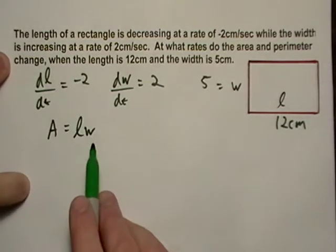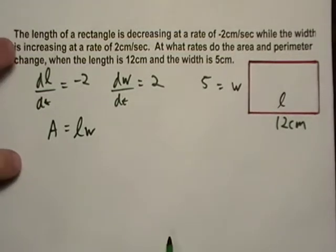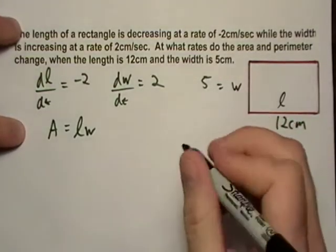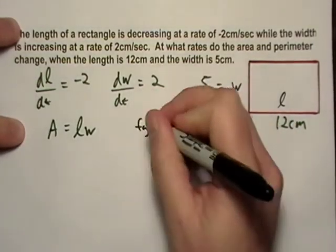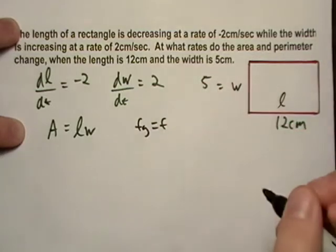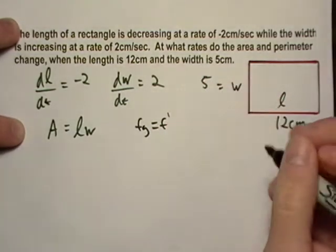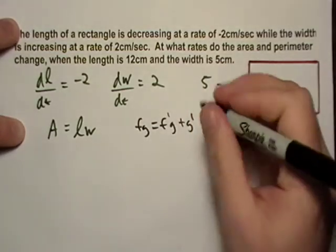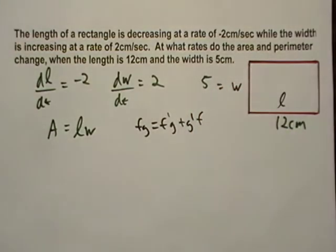The thing here is that we've got a product. So we end up using the product rule, and it's usually not so obvious at first, but remember like f times g, if I want the derivative, I go derivative of f times regular g plus derivative of g plus regular f. We're just going to do the same thing here.